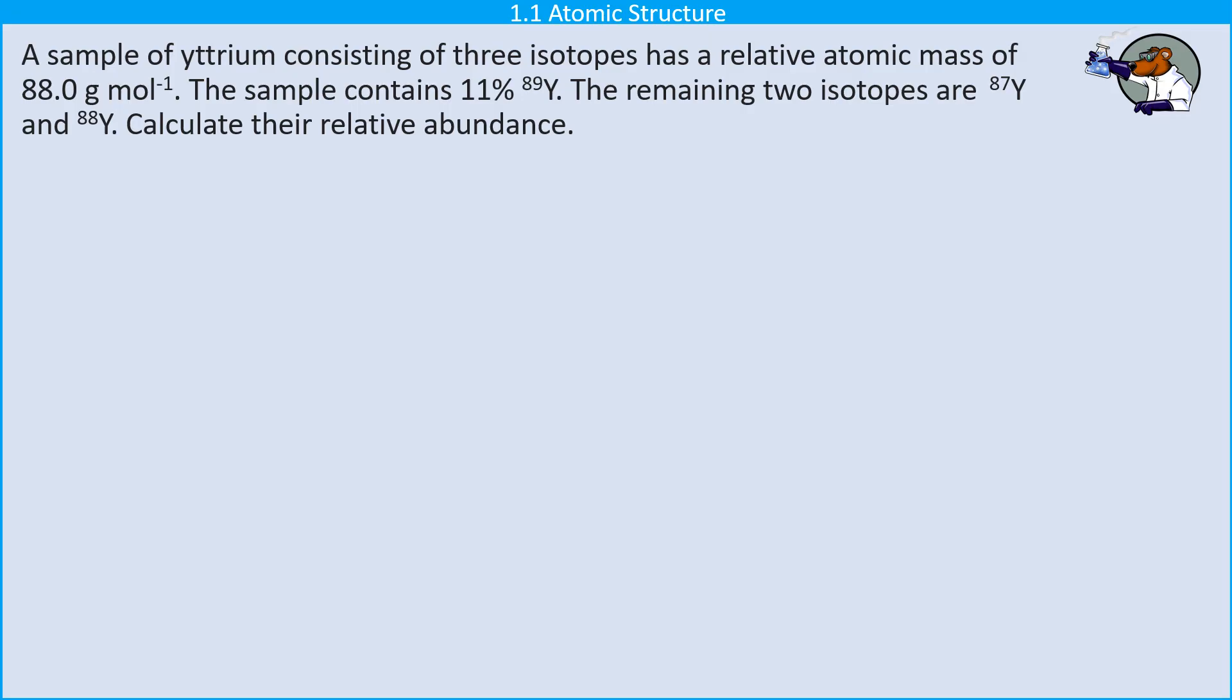Today we're back with atomic structure and thinking about how the relative abundance of some different isotopes can contribute to the relative atomic mass. So in this question we've actually got three isotopes and we know what the masses of those isotopes are, but we don't know the abundances of two of them.